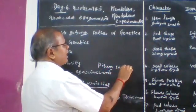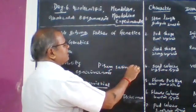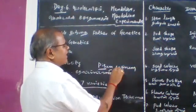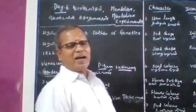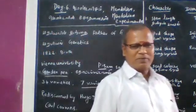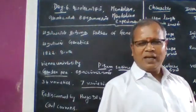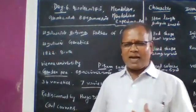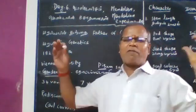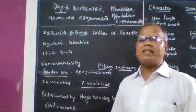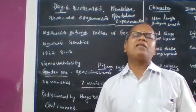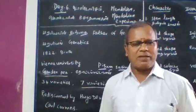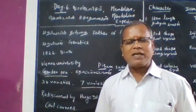In the garden pea plant, 34 varieties are present, and he selected seven varieties for the experiment.